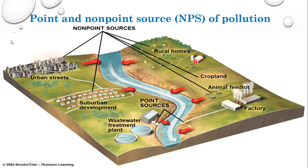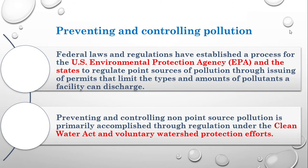In this picture we can see the different point and non-point sources of pollution. Non-point sources include urban streets, suburban development, cropland where fertilizers and pesticides are discharged into water streams, animal feedlots, and runoff from rural homes. Point sources shown include a wastewater treatment plant and a factory — we can exactly identify these discharge locations into the river.